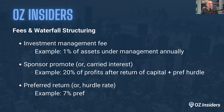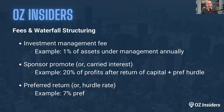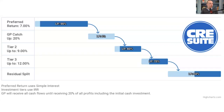Sponsor promote is the sponsor's share of profits after a certain return of capital and preferred return hurdle has been met. In this example, I'm using a preferred return of 7% — also called the pref or hurdle rate. That's the amount of money that needs to be returned to investors before the sponsor can participate in profits. In this example, the sponsor's carry is 20%. Sometimes it's a 10% carry, sometimes 30 or 40%, and sometimes there's a waterfall structure.